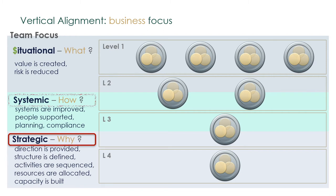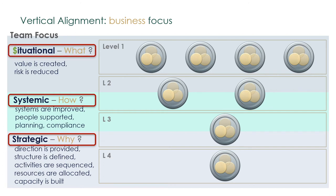The second layer is systemic — it is where systems and processes are managed and improved, answering 'how do we do what we do?' Management and professionals actively improve and sustain the BIPs and BOPs of the business: best improvement practices and best operating practices. The teams in that layer ensure their operational teams are supported, with good planning and compliance to systems. Management's job is to improve the system and support its people. We then have the situational or operational layer, where the hands reach out to the customer and make the product — this is where money is made and value is created.